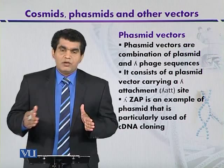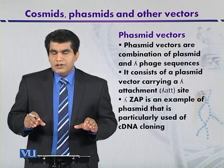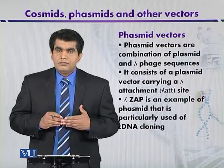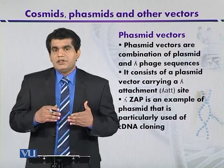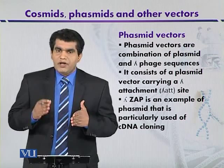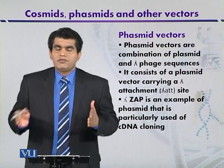The maximum length of foreign DNA insert in lambda ZAP is 10 kilobases. Another advantage is that it may contain multiple cloning sites for different types of restriction enzymes, meaning one cloning site per restriction enzyme, so we can use different enzymes for cloning purposes.